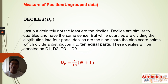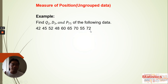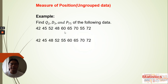Those are the formulas we follow to find the position for ungroup data. Now we have our example: find Q2, D3, and P75 of the following data — 42, 45, 52, 48, 60, 65, 70, 55, and 72.